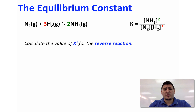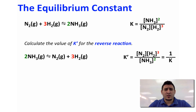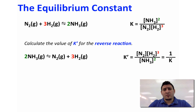If we want to find K prime, the equilibrium constant of the reverse reaction, the products become reactants and the reactants become products. Therefore K prime equals the concentration of N₂ multiplied by concentration of H₂ cubed, divided by concentration of NH₃ squared. This is actually 1 over K — so the equilibrium constant of the reverse reaction is the reciprocal of the equilibrium constant of the forward reaction.